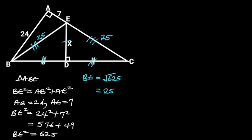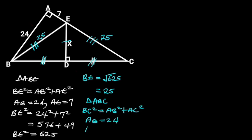Next, let's consider triangle ABC. Triangle ABC is a right triangle. From Pythagoras' theorem, BC squared is equal to AB squared plus AC squared. AB is equal to 24. AC is equal to 7 plus 25, which is equal to 32.